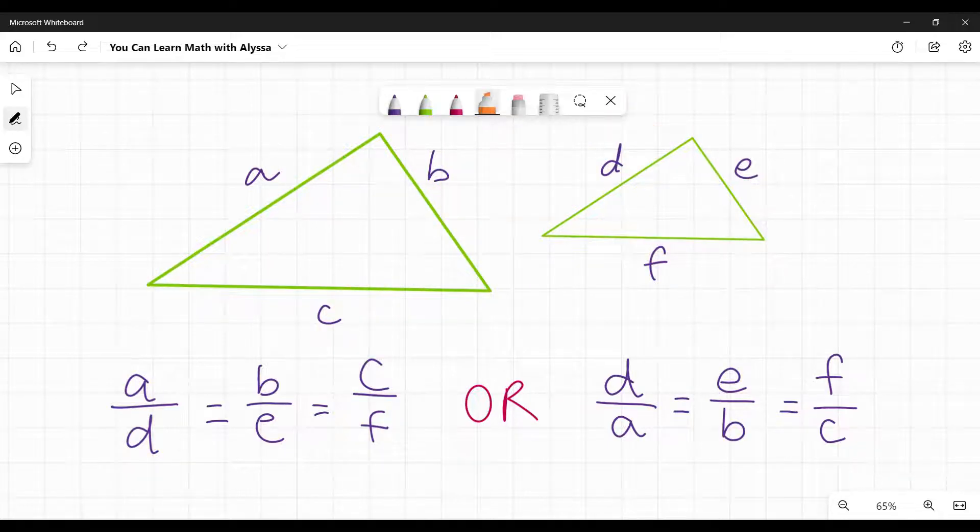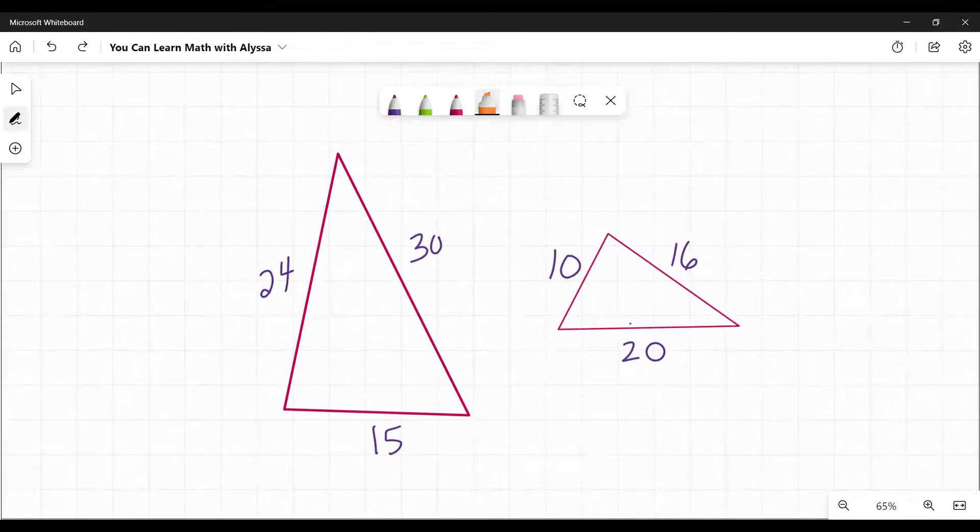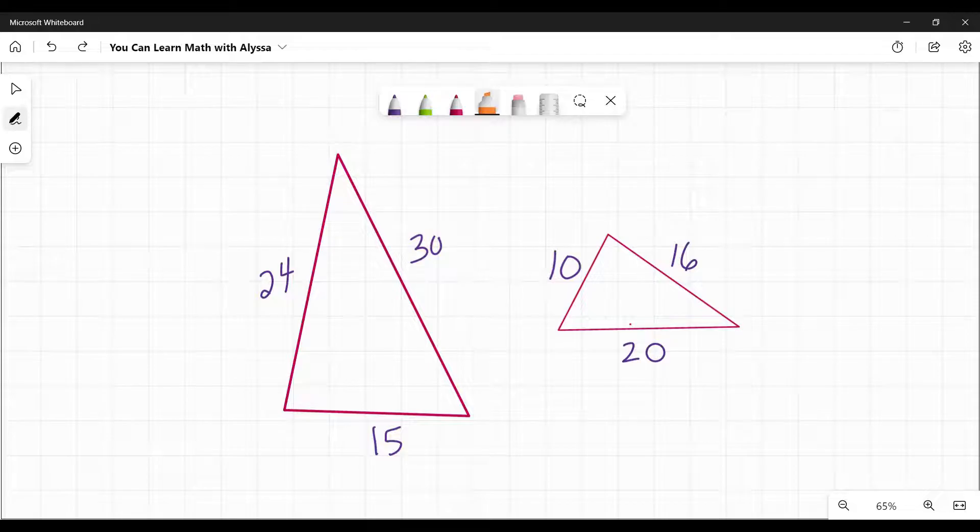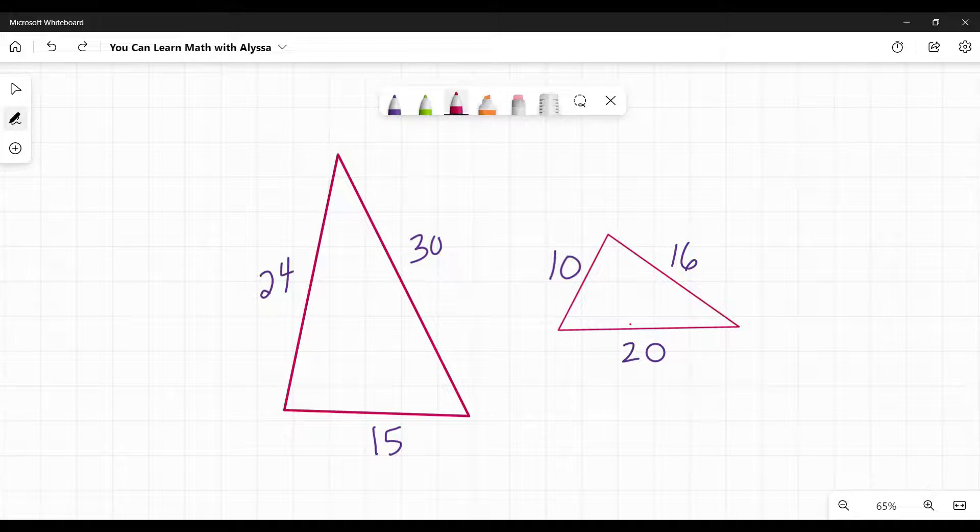The key here is to make sure you are comparing the corresponding sides. So the shortest side to the shortest, the longest side to the longest, and so on. Also be wary of when they rotate the triangles on you so they don't look like they are similar. You have to rely on the numbers, not what you think you're seeing.